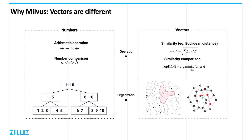Secondly, the indexing organization of the data is different. When dealing with numbers, the values can be directly compared, so we can index stored numbers based on algorithms like B-trees. But between two vectors, we are not able to perform this comparison — we can only calculate the similarity between them. So the vector index is usually based on algorithms like the approximate nearest neighbor (ANN) algorithm. Two ANN approaches are a clustering index and a graph index, which we'll go into further detail about in later lessons. Because of these significant differences, traditional databases and big data technologies cannot meet the requirements of vector analysis.